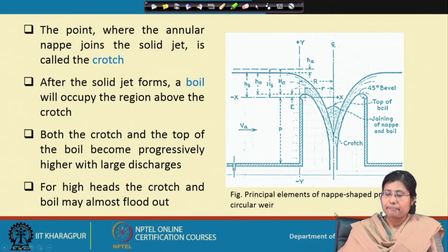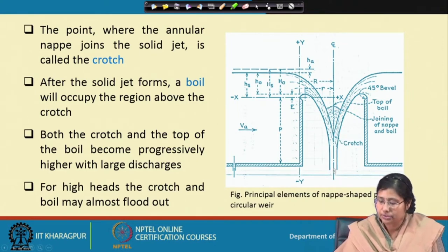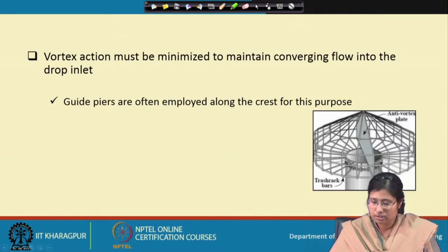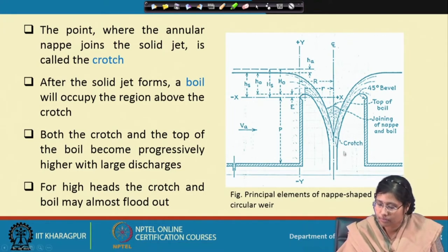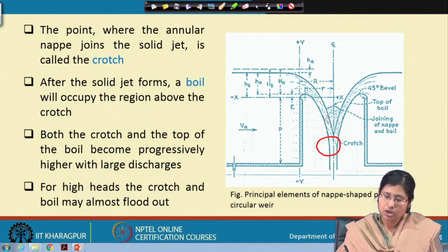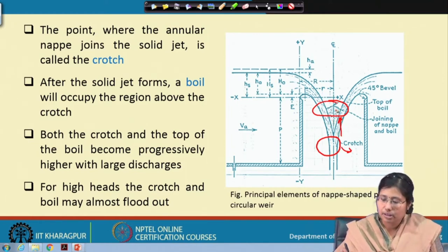This illustrates the principal elements of the nappe shape profile for the circular weir. The point where the annular nappe joins the solid jet — at the bottom — is called the crotch. After the solid jet forms, it can create a structure called a boil, which occupies the region above the crotch. The crotch is formed at the bottom, and the solid jet — due to the continuous flow of water — forms the boil at the top.